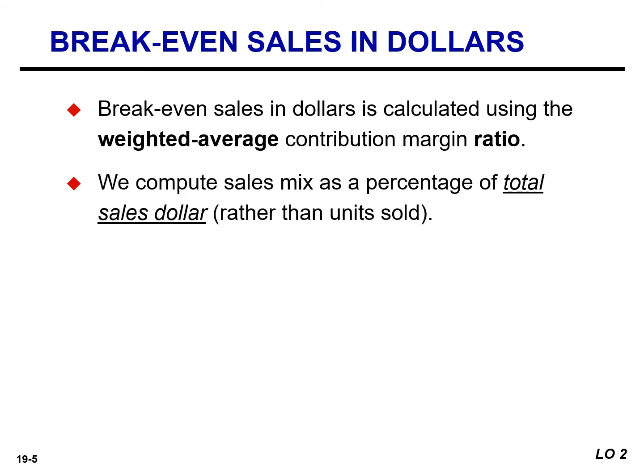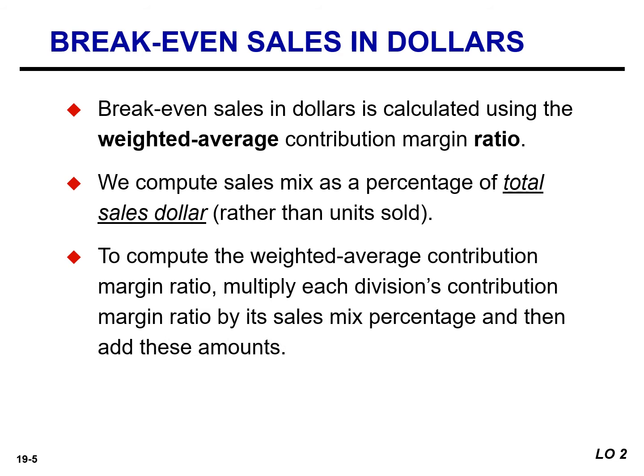We compute sales mix as a percentage of total sales dollars rather than units sold. To calculate the weighted average contribution margin ratio, we multiply each division's contribution margin ratio by its sales mix percentage and then add these amounts.